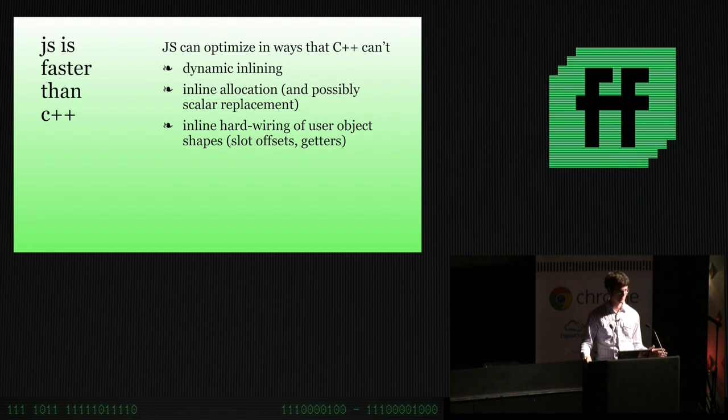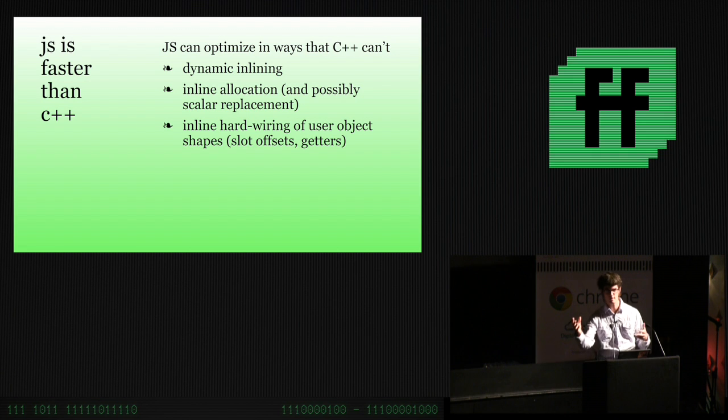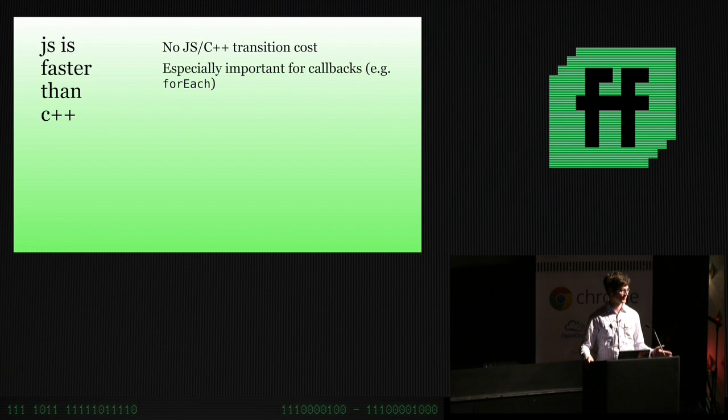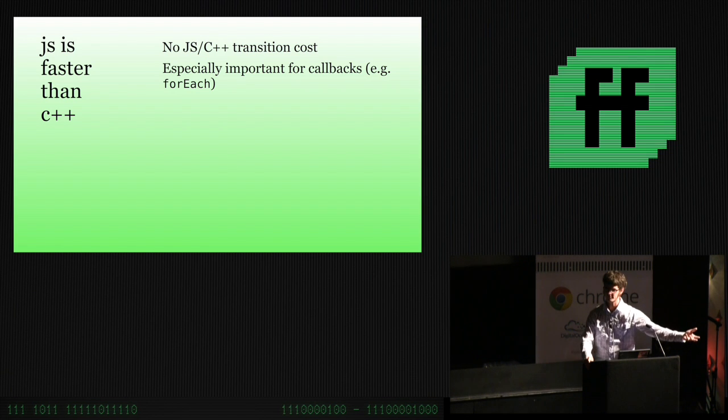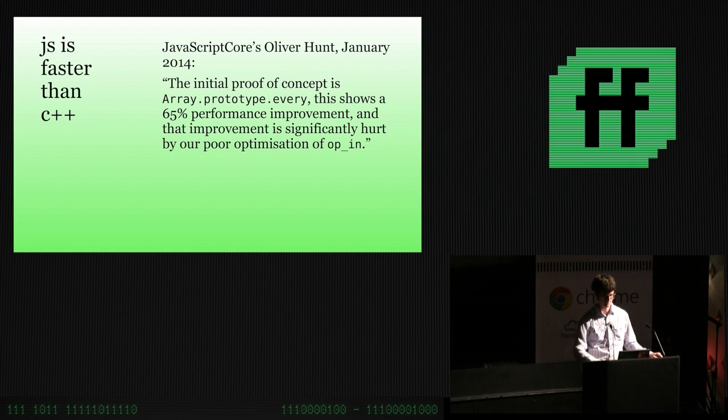When you allocate an object, it's merely incrementing a pointer and nothing else. C++ can't really do this for garbage collected objects like we have in JavaScript. When you access foo.bar, that bar property would be on slot one of the object, that can also get dynamically inlined. This isn't a perf talk, so I'll move on.